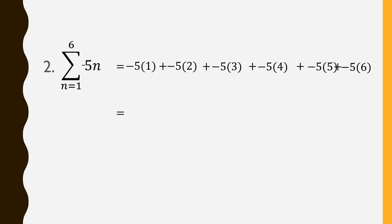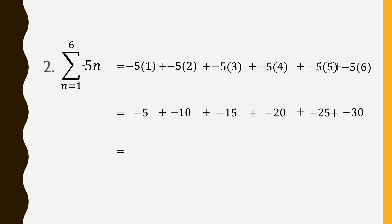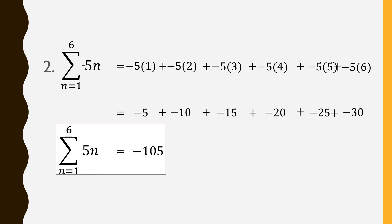Simplifying: negative 5 times 1 is negative 5; plus negative 5 times 2 is negative 10; plus negative 5 times 3 is negative 15; negative 5 times 4 is negative 20; negative 5 times 5 is negative 25; and negative 5 times 6 is negative 30. Adding them all up — since they are all the same sign, negative — we combine them. The sum is negative 105. So that is the value of the summation of negative 5n as n goes from 1 up to 6.